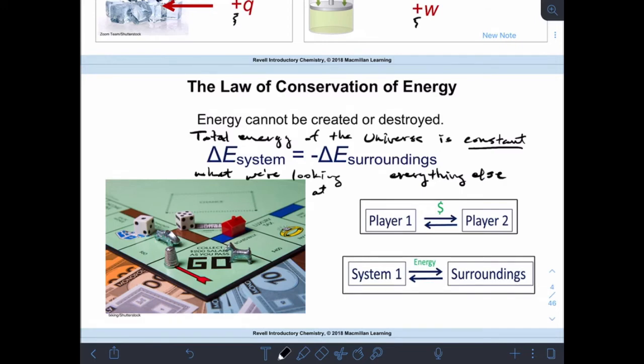So what this particular slide is trying to show is that if we're playing Monopoly, any money that I have to pay goes to somebody else. So if I am the system, the other person is the surroundings. And any money that that person pays out goes to me, and it's equal in amount, just opposite.